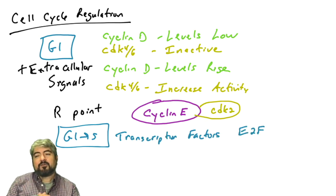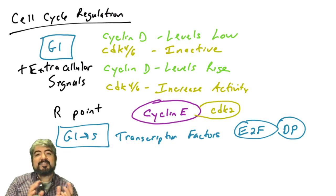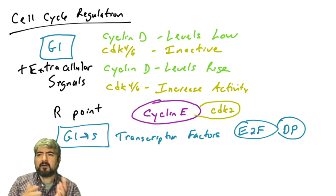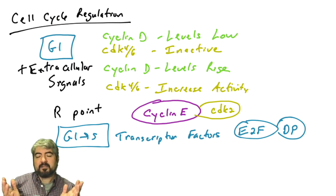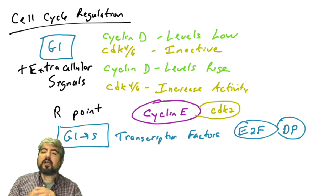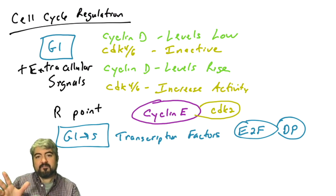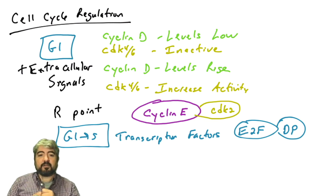We're also going to talk about transcription factors. In this video, we're talking about the transcription factors E2F and DP. There are many different E2Fs in the cell — E2F1, E2F2, and I think they're up to at least eight E2Fs. Then there's DP1 and DP2. We're talking about E2F and DP in general — they are transcription factors that form heterodimers, and we'll see which gene promoters they bind and which genes they turn on.